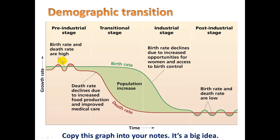In the pre-industrial stage, birth rate and death rate are both high — an undeveloped country — but with a stable population. The transitional stage is when a country is becoming developed: death rate declines due to increased food production and improved medical care, but birth rate stays high because people are used to having lots of babies, resulting in a booming population. In the industrial stage, birth rate begins to decline due to increased opportunities for women and access to birth control, and rates begin to catch up with each other. In the post-industrial stage — which the U.S. is in — both birth rate and death rate are low, giving a stabilized population again.